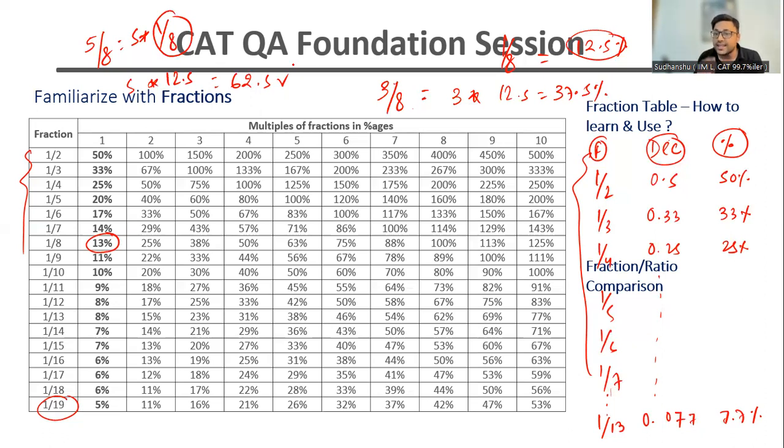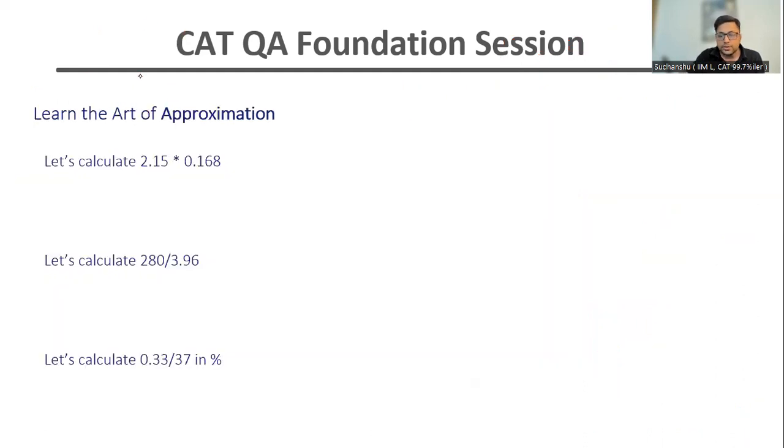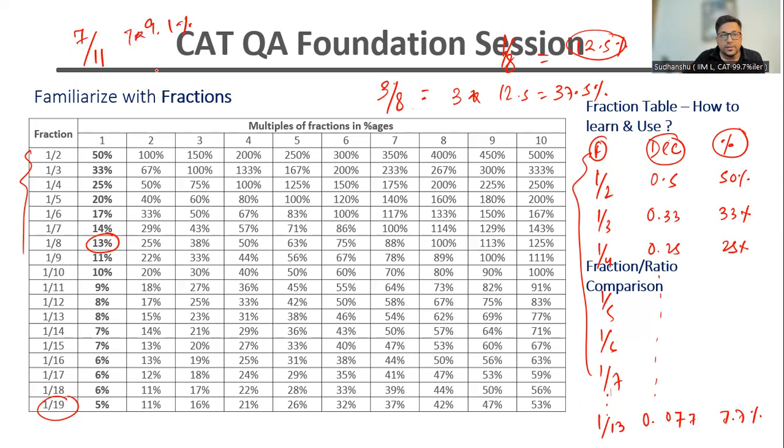Similarly if I have to calculate let's say 5 by 8, that will become 5 into 1 by 8. 1 by 8 in percentage is 12.5, so 5 into 12.5 will become 62.5. You can similarly calculate many fractions. Let me give you another example. Let's say you have to calculate 7 upon 11. Before you understood the fraction table, you would divide it. But if you remember the fraction table, you remember 1 by 11. So 1 by 11 is let's say 9.1 percent. So 7 upon 11 will be 7 into 9.1, which becomes 63.7 percent.